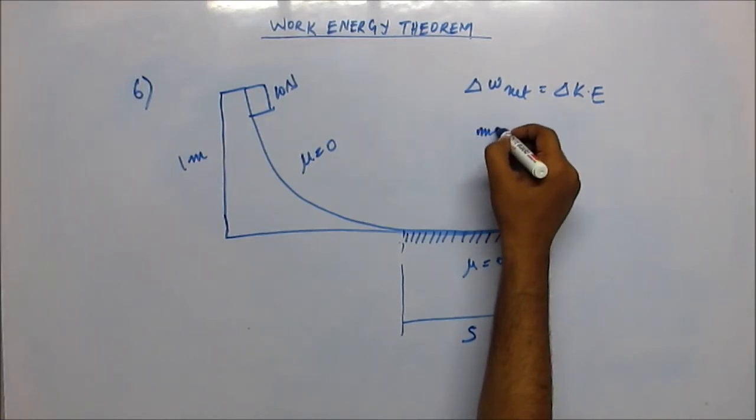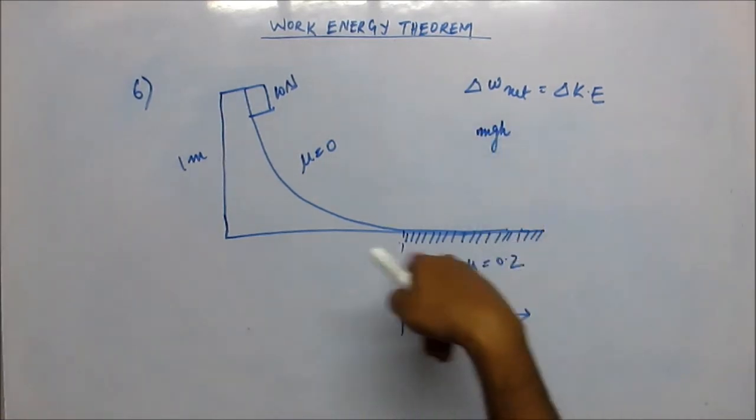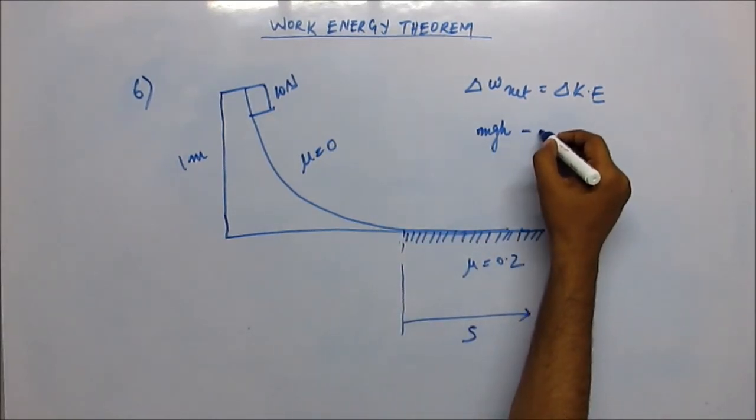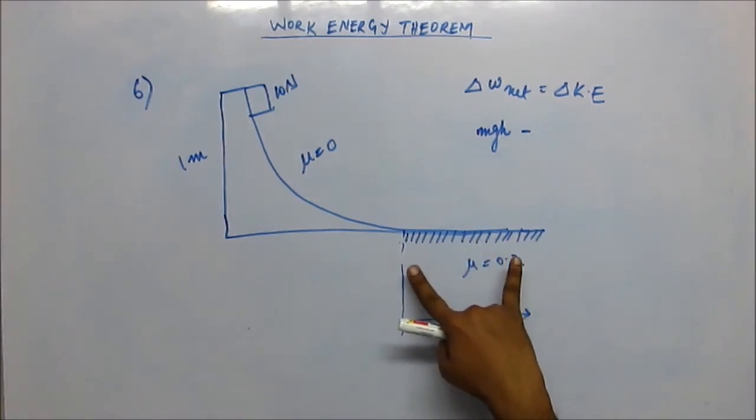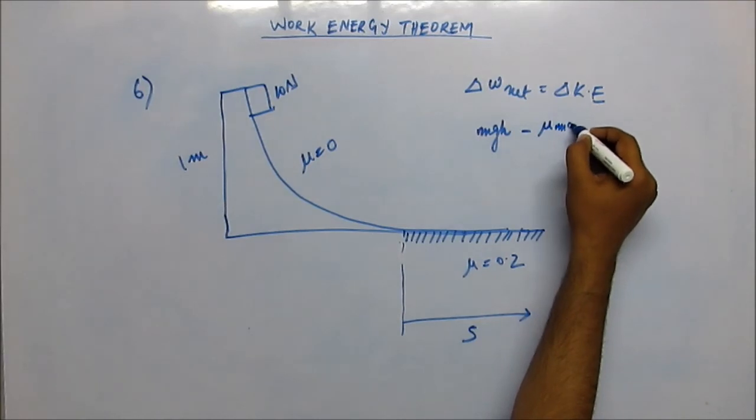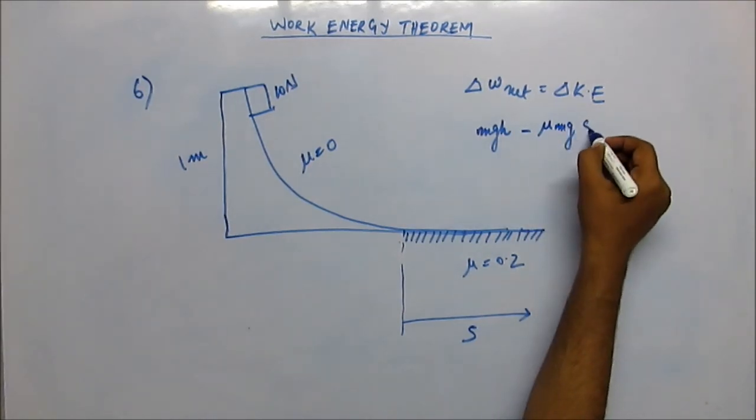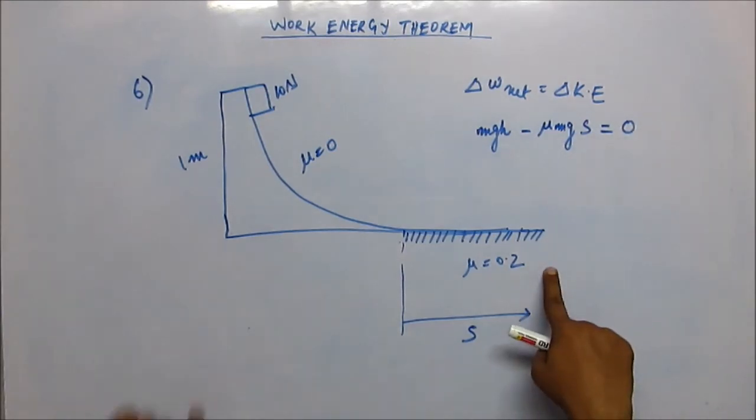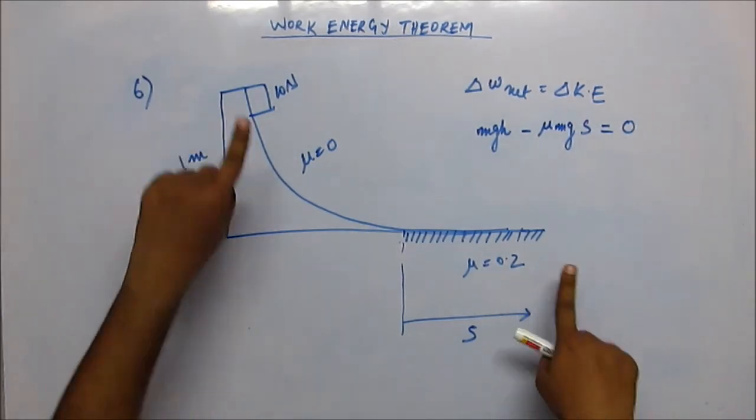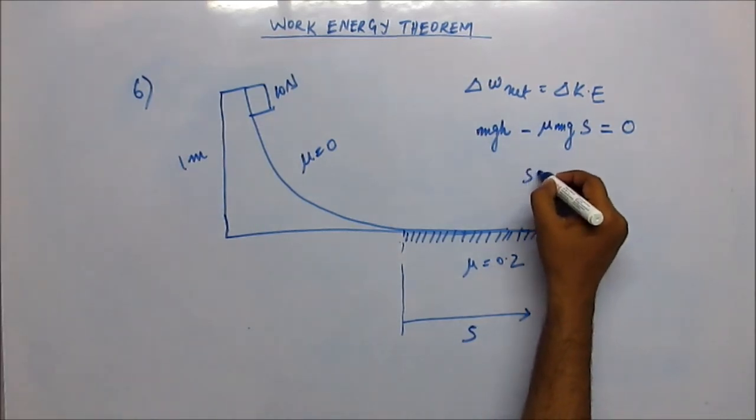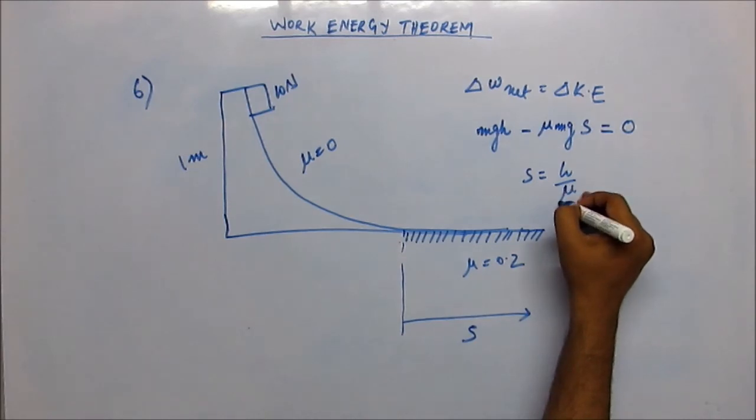Here we'll have gravity and friction force. The work done by gravity is mgh and work done by friction, the friction in this case is opposing, so that will be negative of frictional force into displacement. In this region, frictional force is mu times normal reaction which is mg, times displacement. This should equal zero because it started at rest and stops at rest, so there is no change in kinetic energy. So s would be simply h by mu, that comes out to be 5 meters.